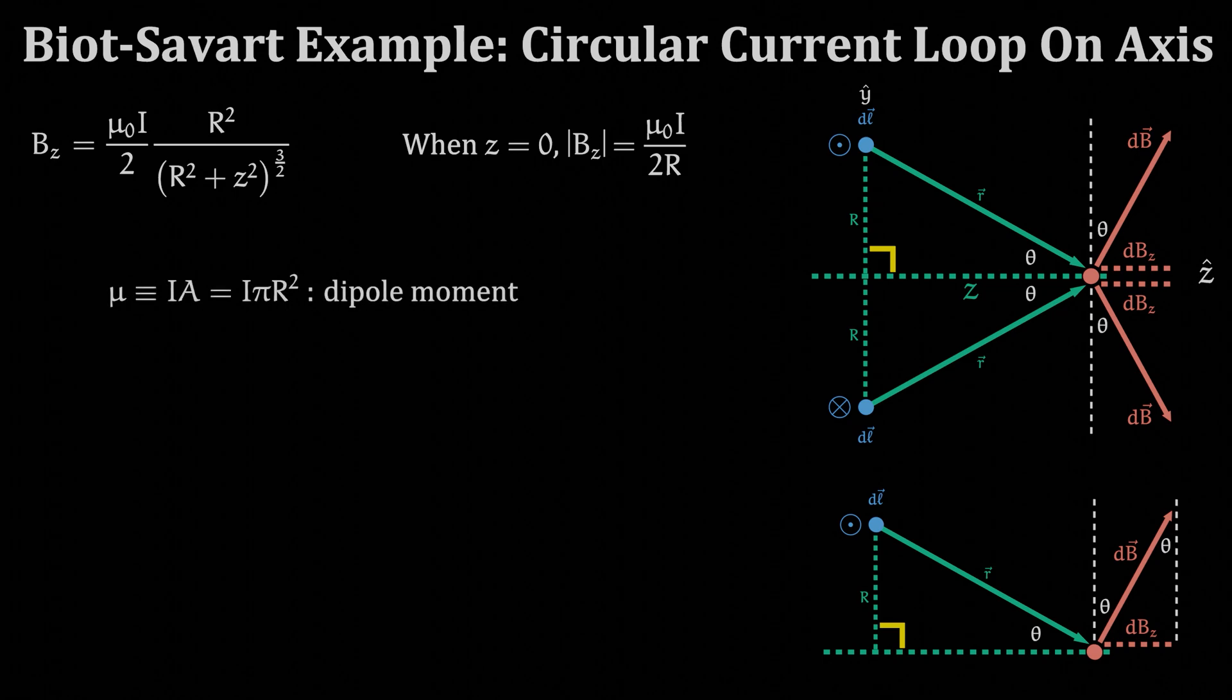The magnetic dipole moment is just denoted with the Greek letter mu, which should not be confused with mu naught, the permeability of free space. Mu is equal to the current times the cross-sectional area of the loop, in this case the area of a circle.